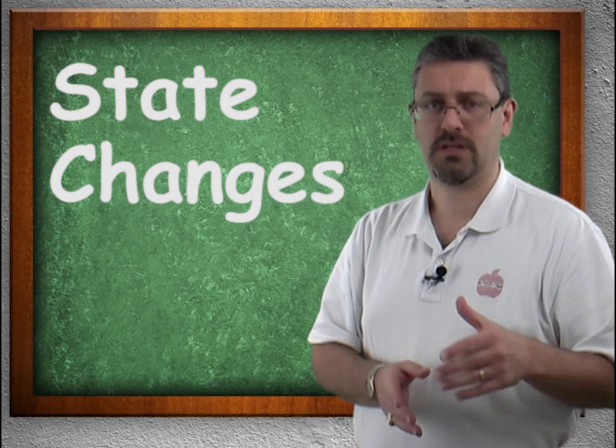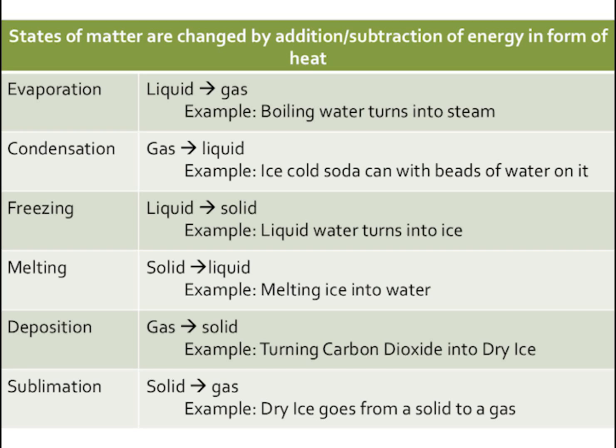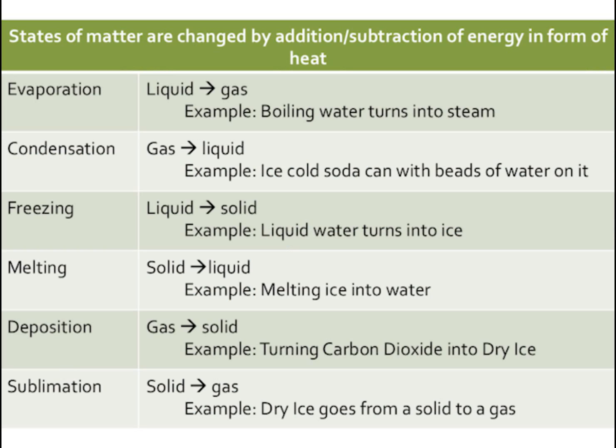There are specific names for these changes. We have evaporation, liquid to a gas. If you boil water long enough, it turns into steam and the steam will eventually go away. Condensation is glass sweat. If you've ever had a cold drink in a glass container on a hot day, it starts to bead water on the side. Water vapor, a gas outside your cup, makes contact with this very cold surface. The cold pulls the energy out, going from a gas to a liquid. Freezing: liquid to a solid. We freeze water, it turns into ice. Melting: solid to liquid.